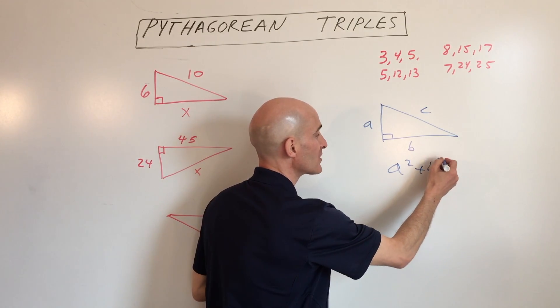Last example here: 130, 50. You can see they both end in 0. So if I divide these both by 10, we get 13 and 5. It looks like 5, 12, 13, so that means this side must be 12. But since we multiply these by 10, we want to multiply this one by 10 as well: 120.